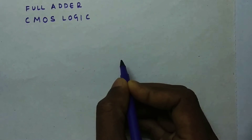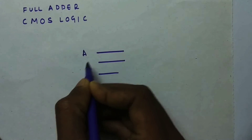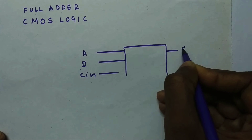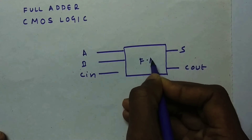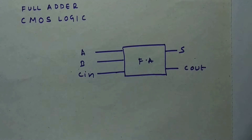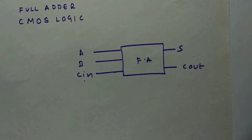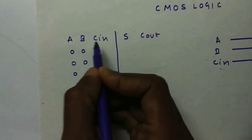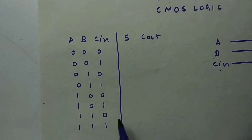So before going to CMOS logic, I will be discussing about the full adder. As you know, a full adder will have three inputs: A, B, and Cin — where Cin is the carry in — and we have two outputs: Sum and Carry Out. I'm going to take all possible combinations of A, B, and Cin. With three inputs, we have 2^3 = 8 possible combinations.